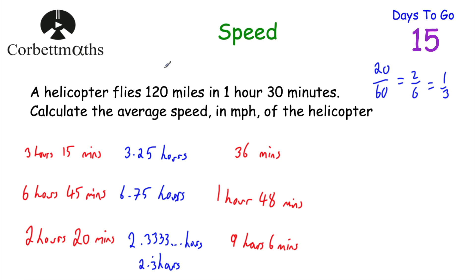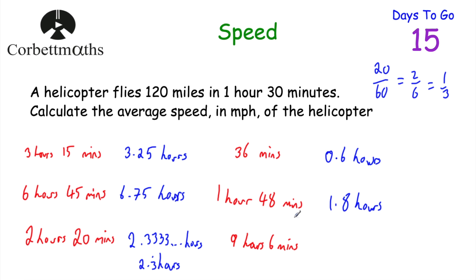36 minutes: you can take 36 and divide it by 60 on your calculator. 36 divided by 60 is 0.6, so that's 0.6 hours. 1 hour 48 minutes: 1 point something — 48 divided by 60 is 0.8, so that's 1.8 hours. And 9 hours 6 minutes: 6 divided by 60 is 0.1, so that's 9.1 hours. So if you got those, well done — it can be quite useful to convert hours and minutes into just hours for these questions.